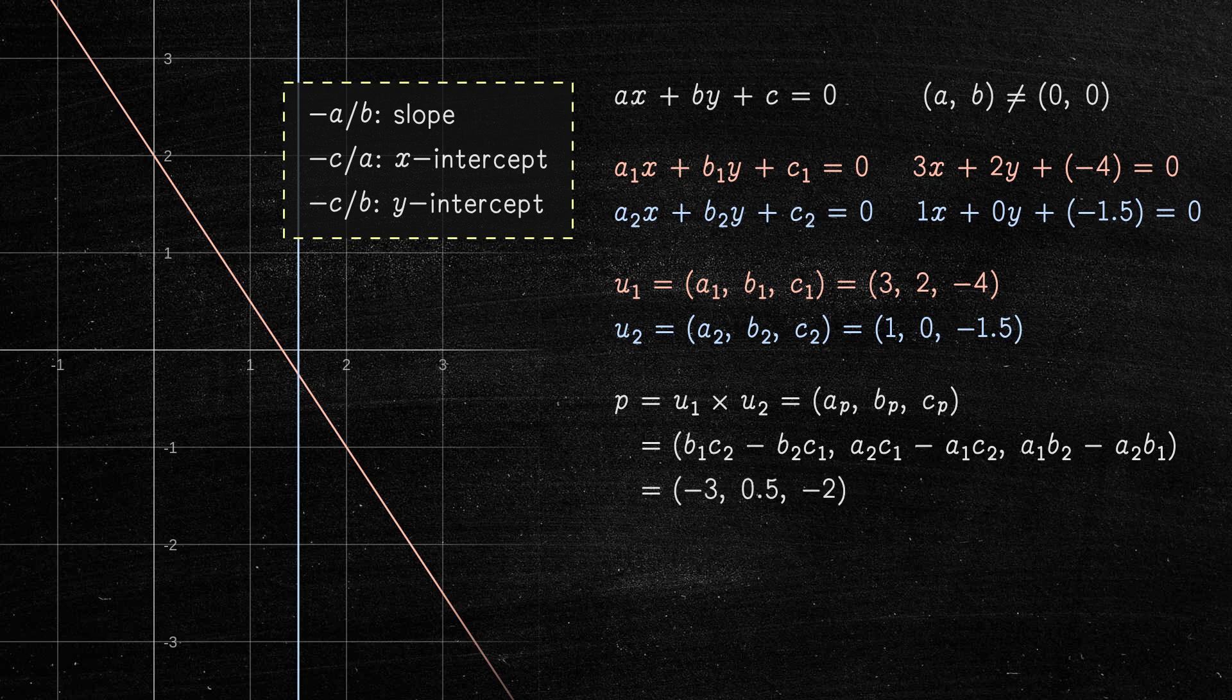If Cp is equal to zero, then the lines do not intersect. Otherwise, the two lines intersect at this point.